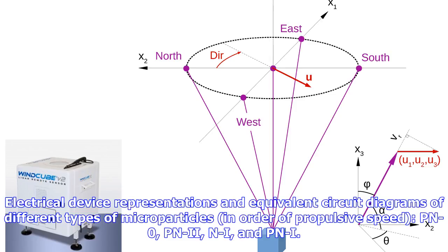Electrical device representations and equivalent circuit diagrams of different types of microparticles, in order of propulsive speed: PN0, PN2, NI, and PNI.